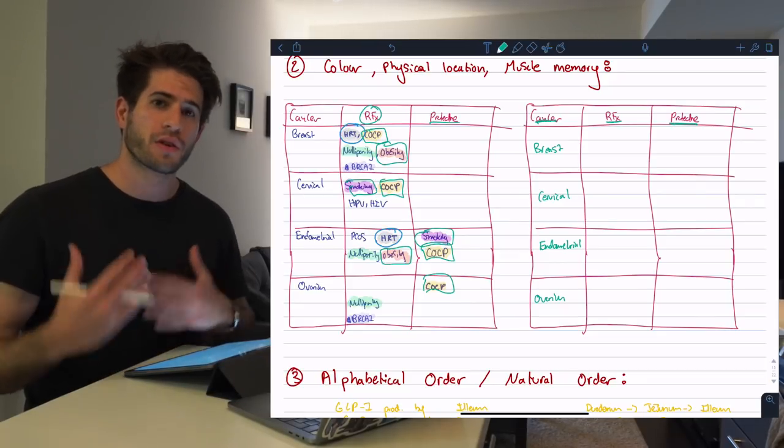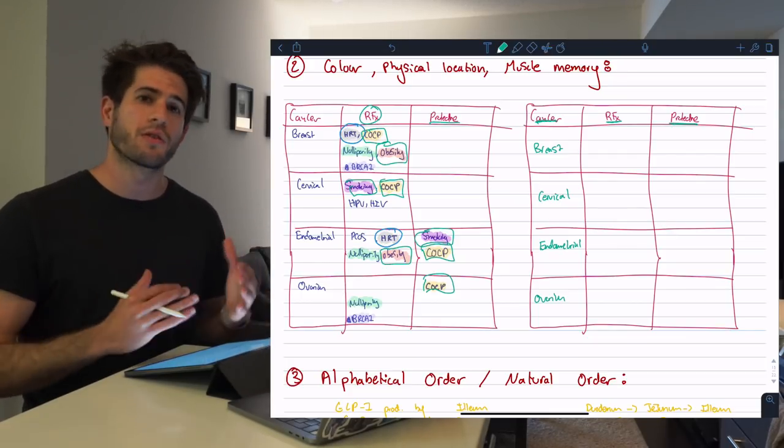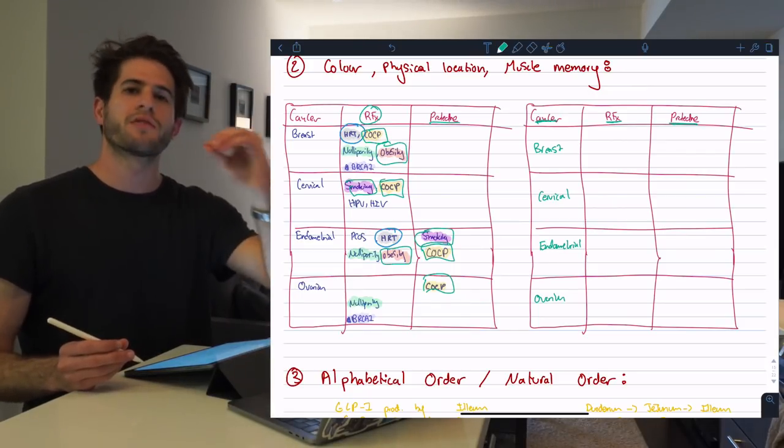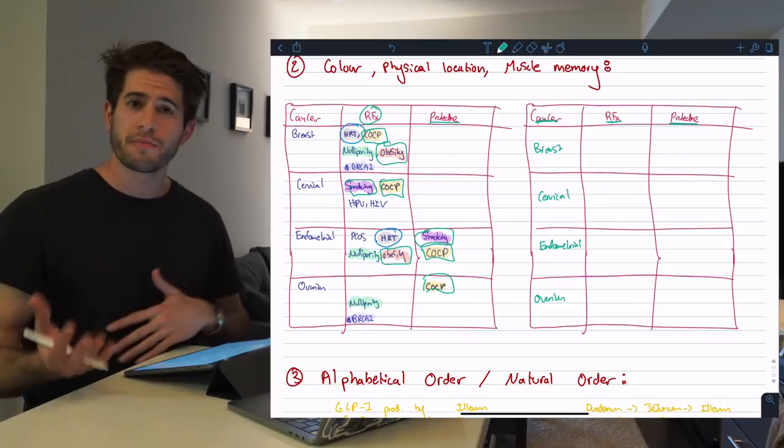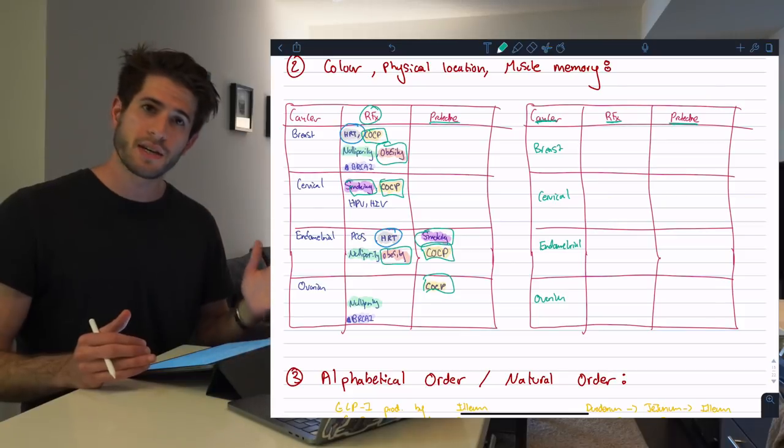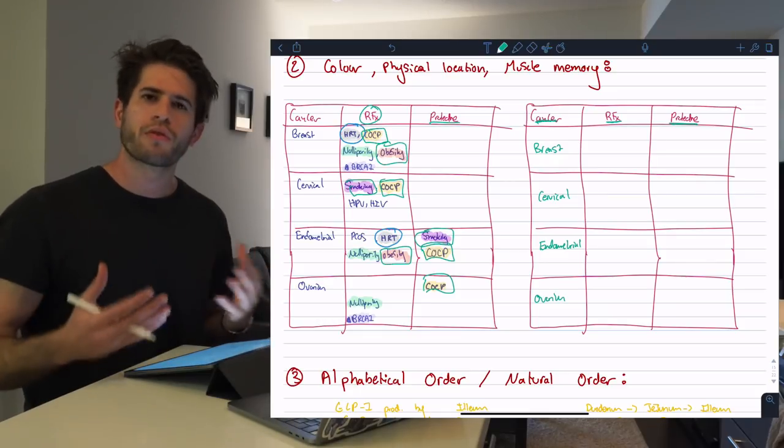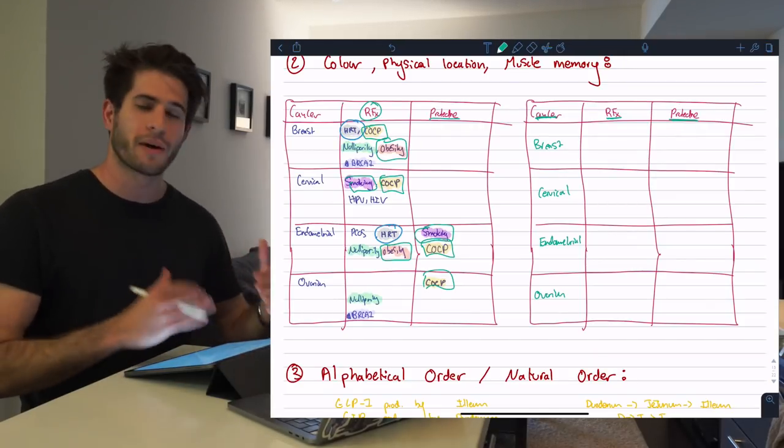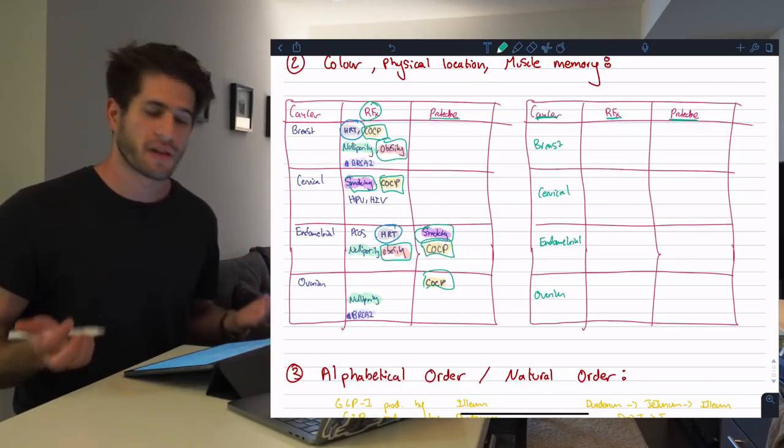The second thing I did was looked at physical location. I didn't actually end up memorizing any of these factors themselves. What I ended up memorizing was their physical location within my table. For example for COCP I just remembered that it was 1-1 skipped to the right, 1-1. That way I knew that COCP was a risk factor for the first two cancers and a protective factor for the second two. Similarly I remembered that nulliparity and obesity were both found in the first and third row on the left-hand side. The point is I was memorizing where the factors were physically located in my table as opposed to the actual words themselves.